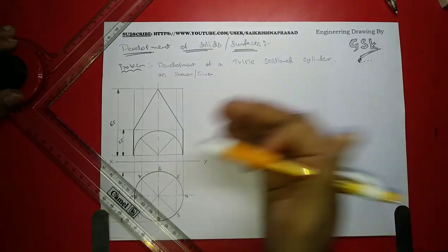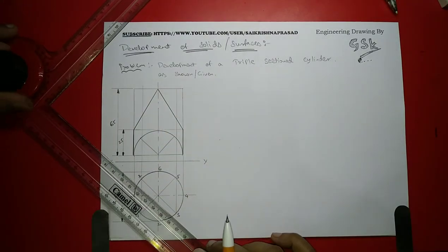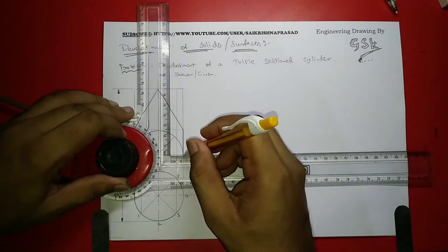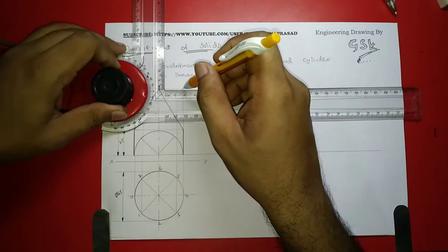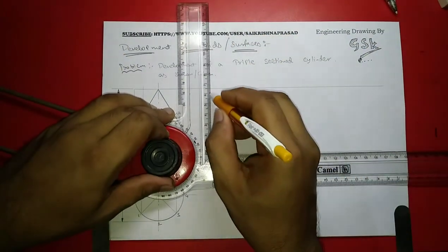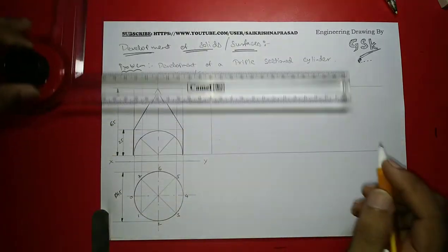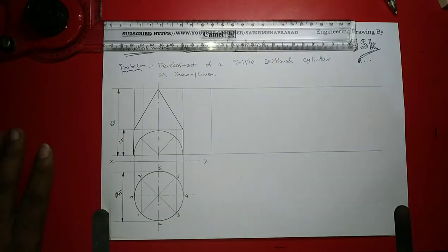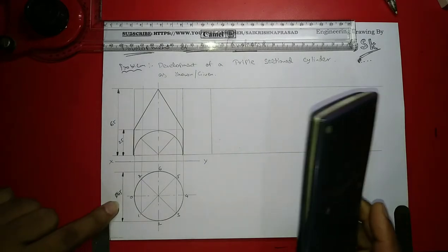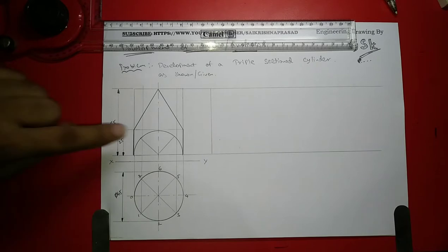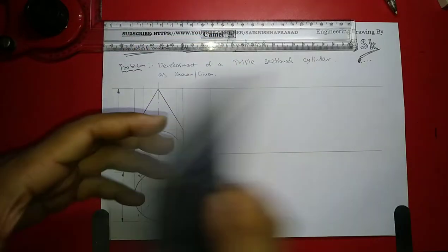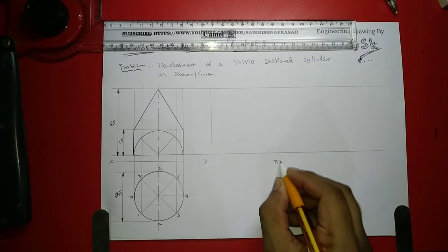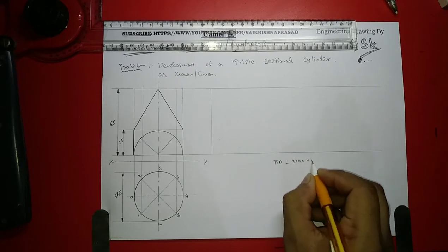A simple development of cylinders would be just opening the cylinder. From here I'll draw the surface line. For getting the total length we have to calculate the circumference of the cylinder base. The diameter is 45mm and height is 65mm. I have already taken the 65 height. The circumference would be pi D, equal to 3.14 into 45mm.